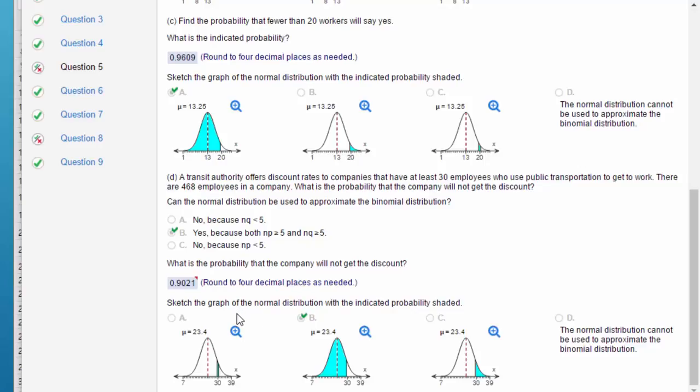The last part of the problem, Problem D, says the authority offers discounts to companies that have at least 30 employees to use public transportation. This company has 468 employees, what is the probability that the company will not get the discount? If they are not getting the discount, that means they have fewer than 30, because the requirement is at least, which is greater than or equal to. So the complement of that, which would not get the discount, would be fewer than 30 or less than 30.